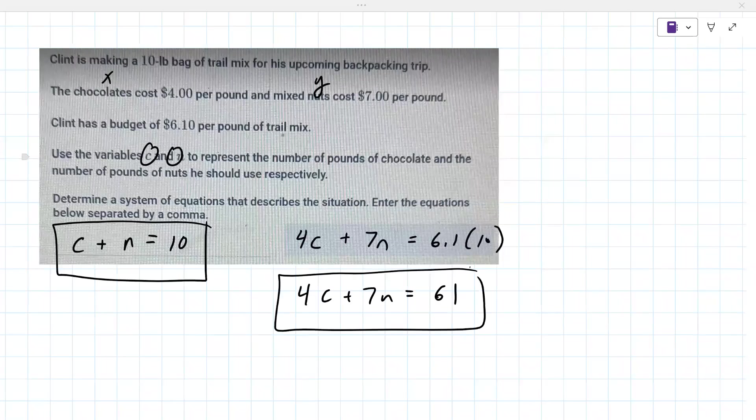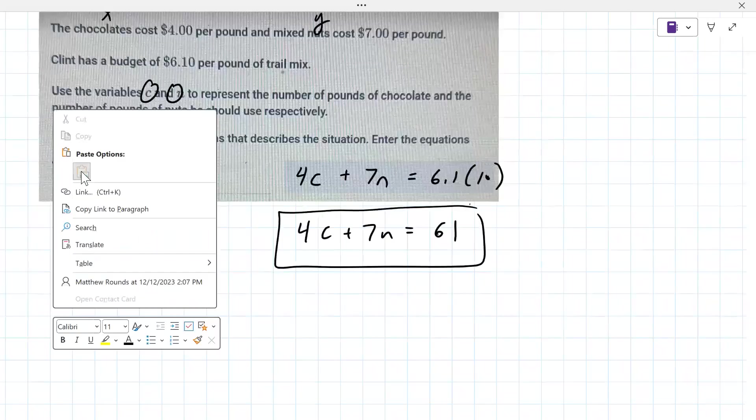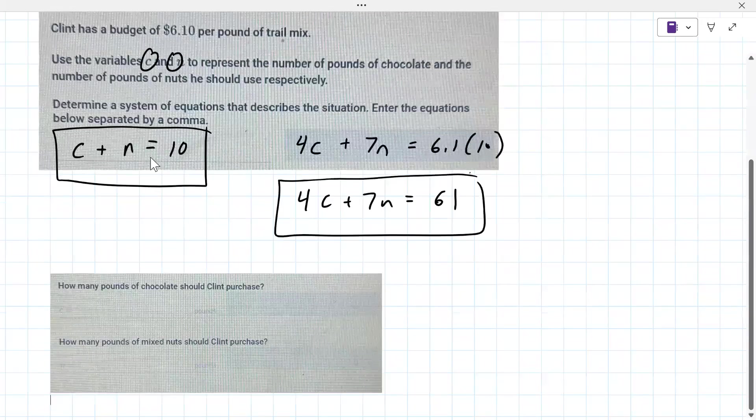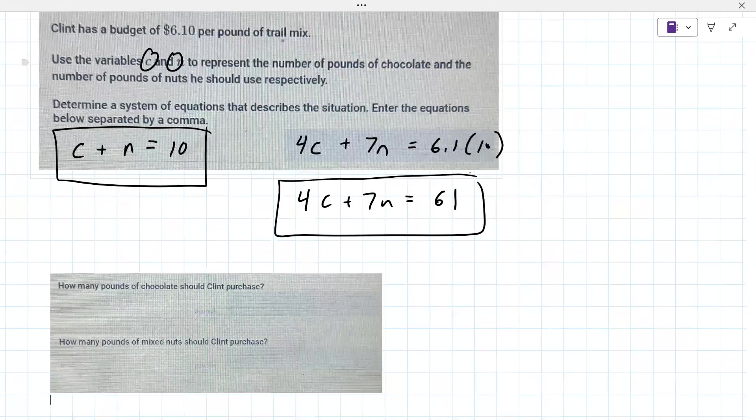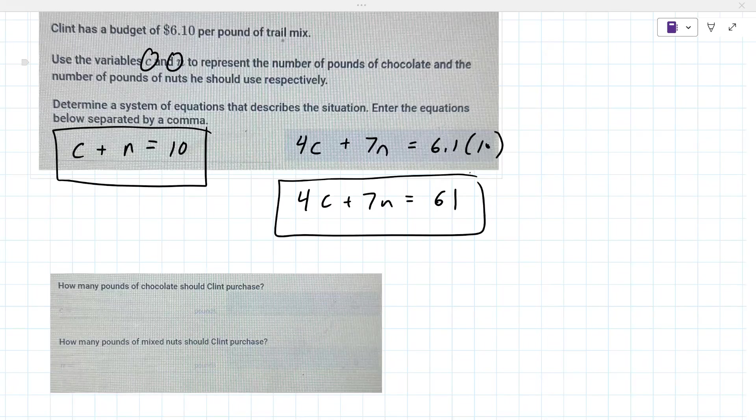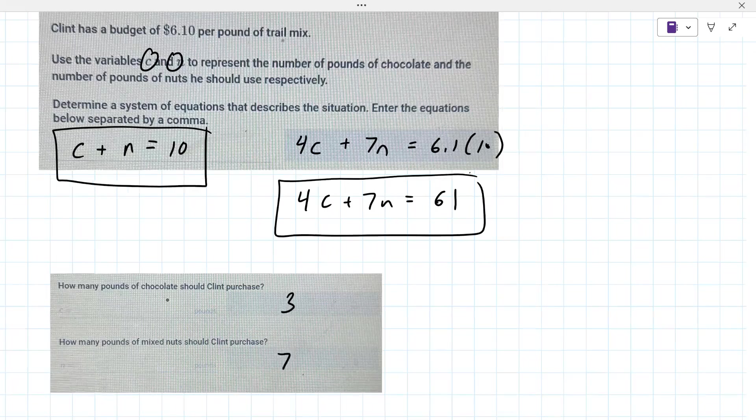Alright, now to answer the next questions. In important situations like these, I never do them by hand, I always use some technology. I'm going to use a matrix calculator that I like. I would encourage you to work these out as well. You have to make sure that your answers are consistent. So I get three for c and seven for n.